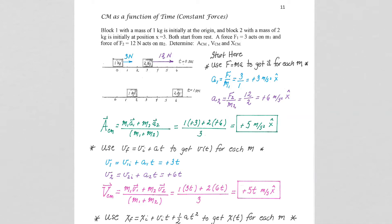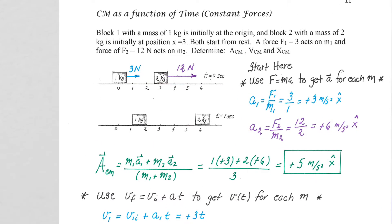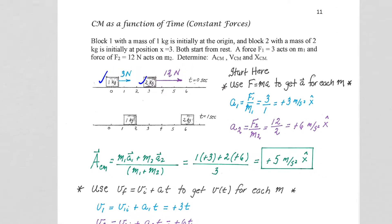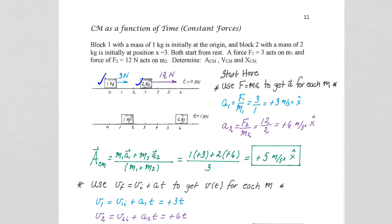In this lesson, we are going to look at a system of particles — two particles. We have a one kilogram particle and a two kilogram particle with external forces acting on them constantly. The one kilogram particle has a three Newton force acting on M1, and we are going to have a 12 Newton force acting on particle two to the right, as shown here.